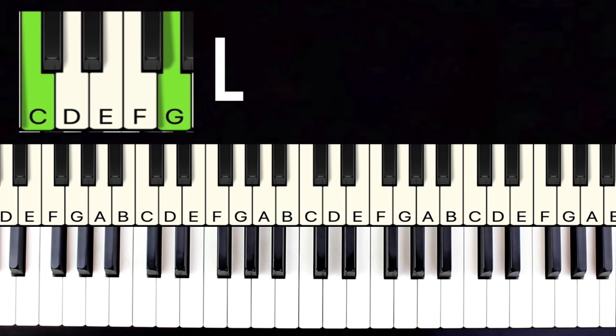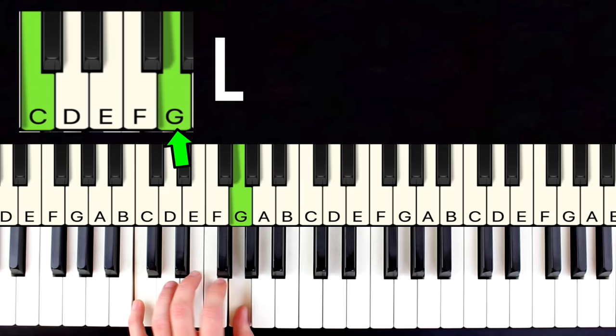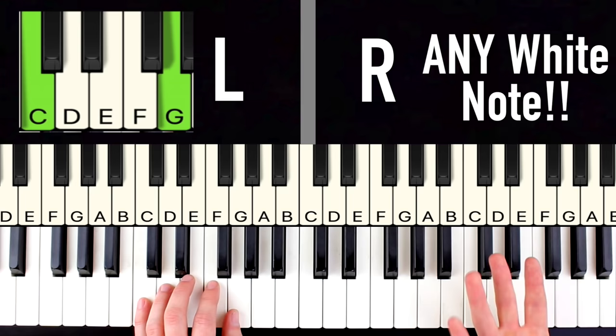Alright so for skill number two, the heart melter, again you're going to find two black notes and go one to the left. So two black notes, one to the left. This time we're going to put our left pinky here and we're going to count up one two three four five and our right thumb goes here. Now all we're going to do this time is we're going to alternate pinky thumb, pinky thumb, over and over. And as we're doing that we can play any white note on the entire keyboard with our right hand and it's always going to sound good. Check this out.